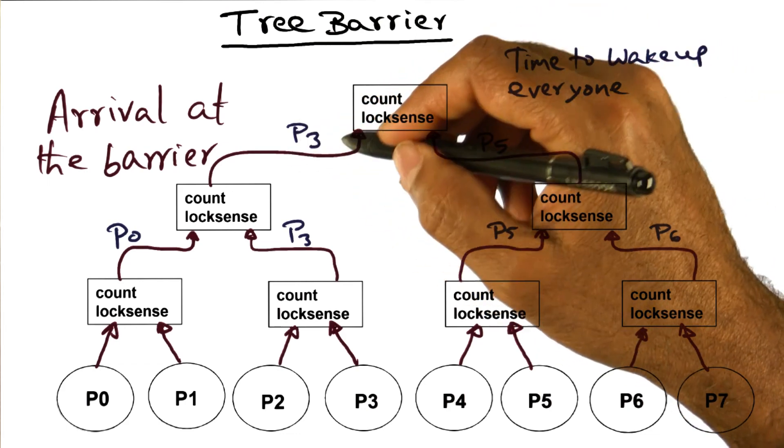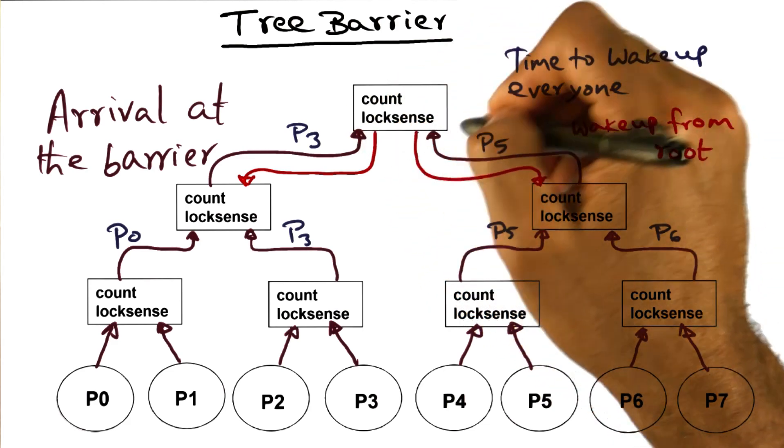So freeing up P3, and it is now ready to go down the tree as well to tell his buddies that the barrier is done, and wake up everyone along the way. So the wake up starts from the root. And so in this case, P5 and P3, having been released from the root, they're going to come down to the next level, and they're going to wake up the buddies that are waiting at this level of the tree.